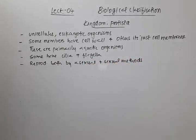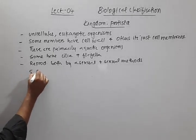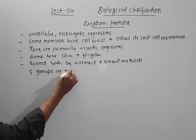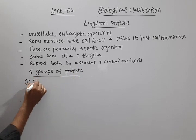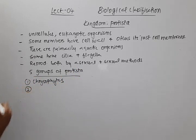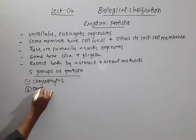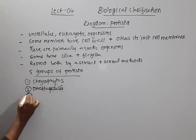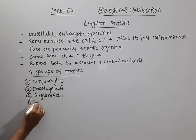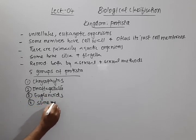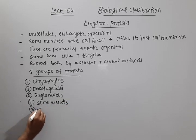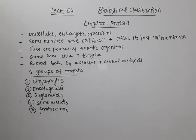Kingdom Protista is divided into five different groups. These are: chrysophytes, dinoflagellates, euglenoids, slime moulds, and protozoans.